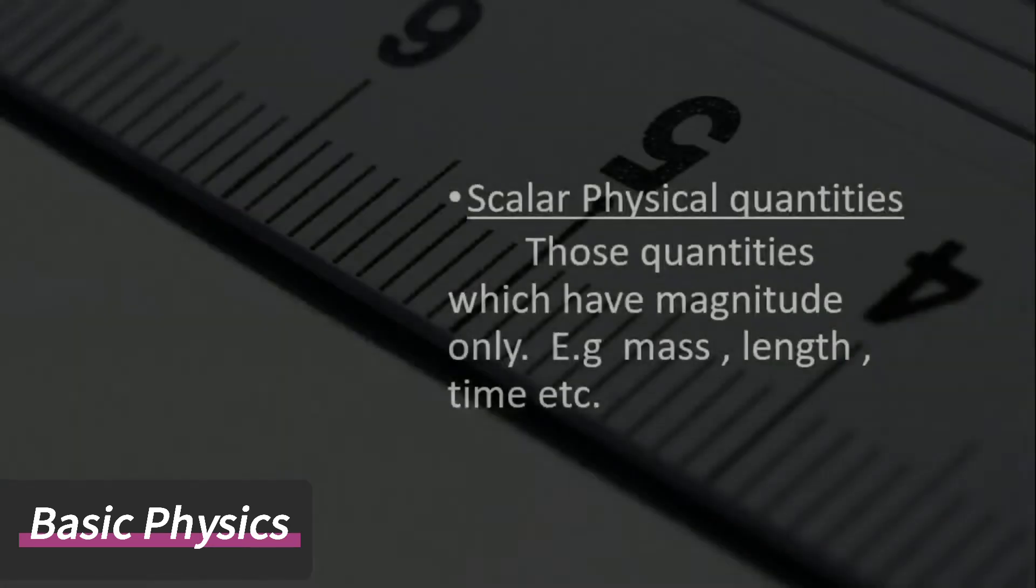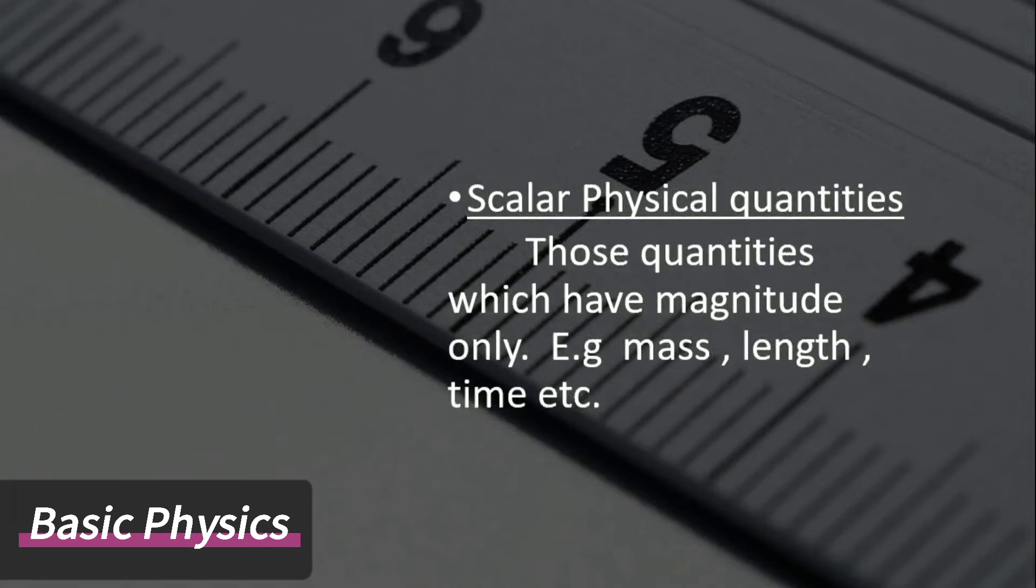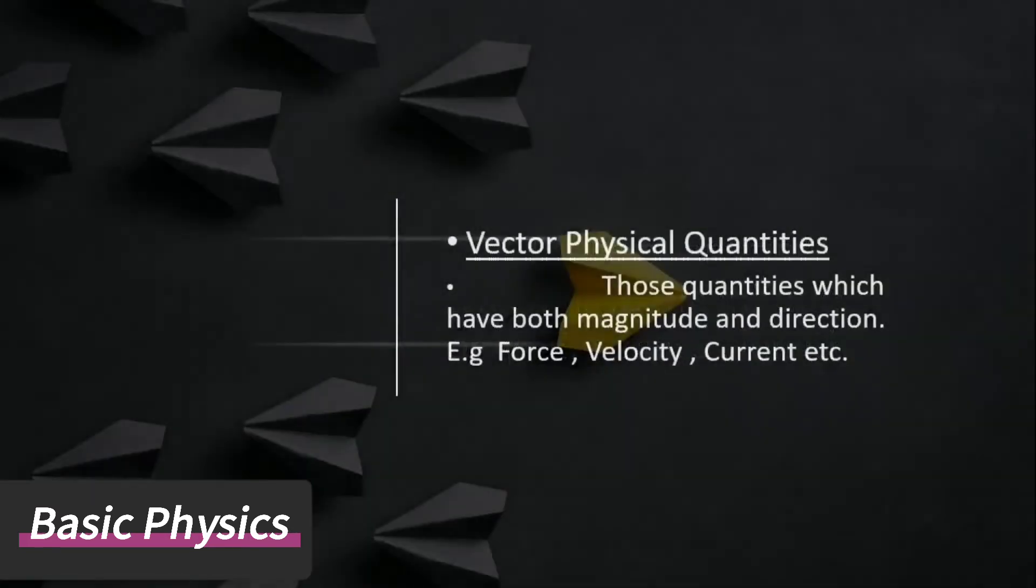Scalar physical quantities are those quantities which have magnitude only, for example mass, length, time. Vector physical quantities are those quantities which have both magnitude and direction, for example force, velocity, electric current.